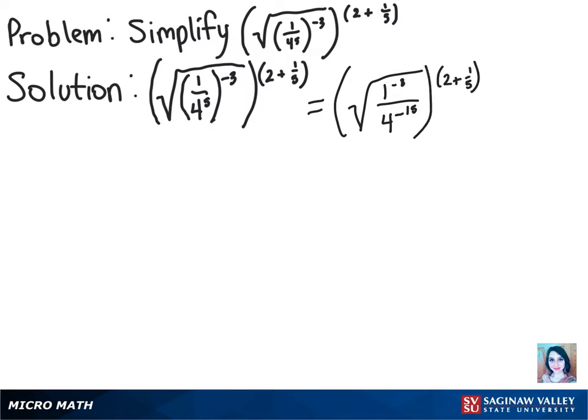And then since we have negative exponents on the numerator and denominator, we have to flip them both, so we'll just end up with the reciprocal. So we'll have the square root of 4 to the 15th power over 1 cubed raised to the power of 2 plus 1 fifth.